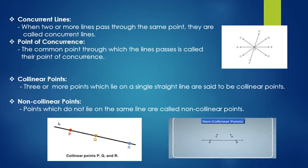Non-collinear points. Points which do not lie on the same line are called non-collinear points. In the figure shown below, point A, point B, point C and point D are non-collinear points.